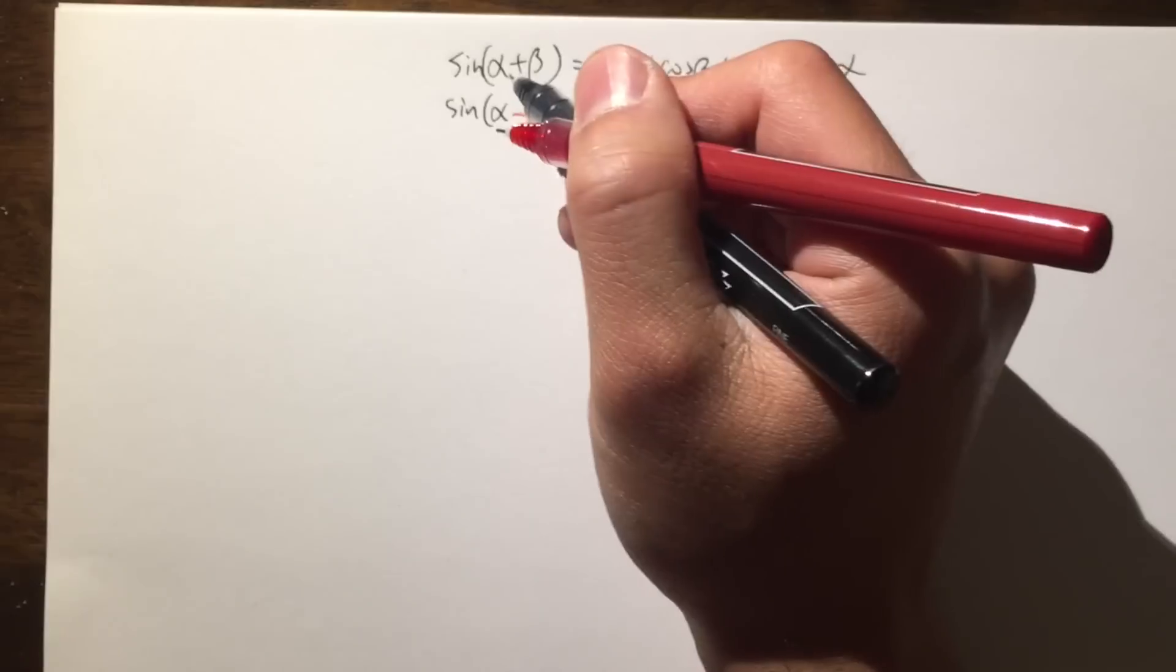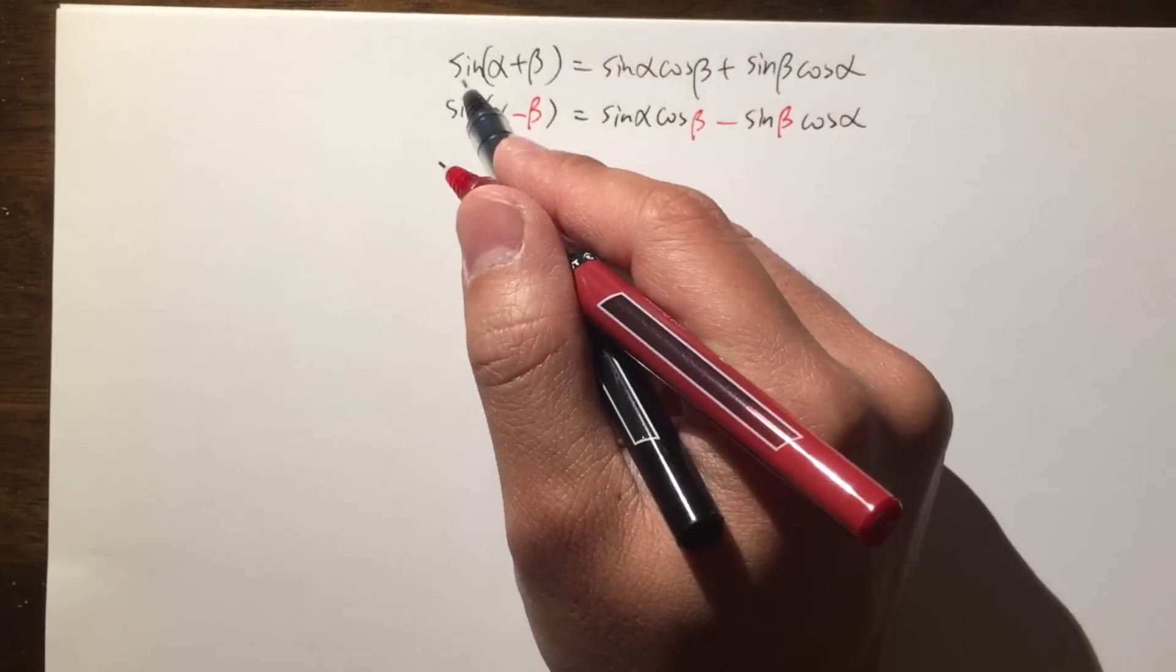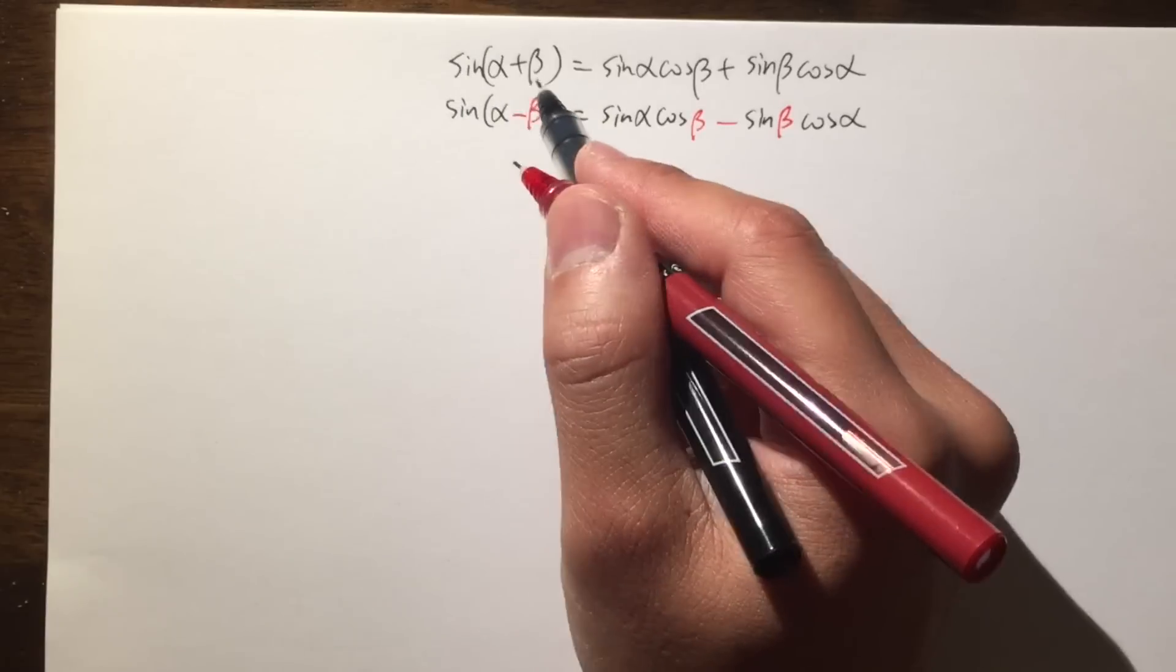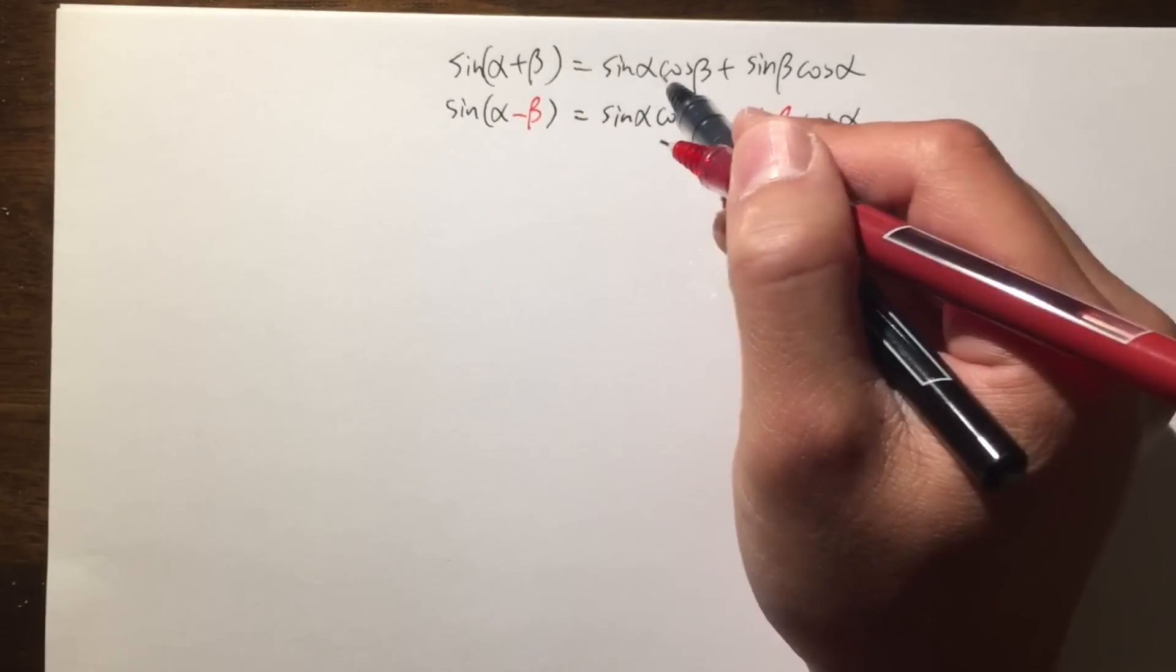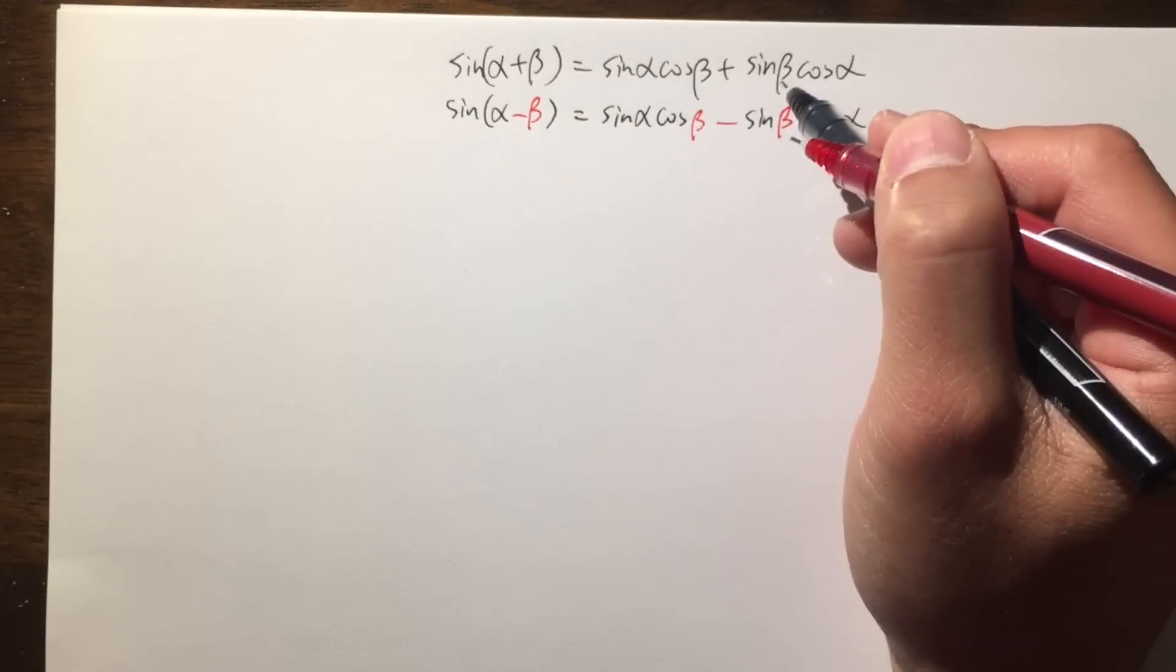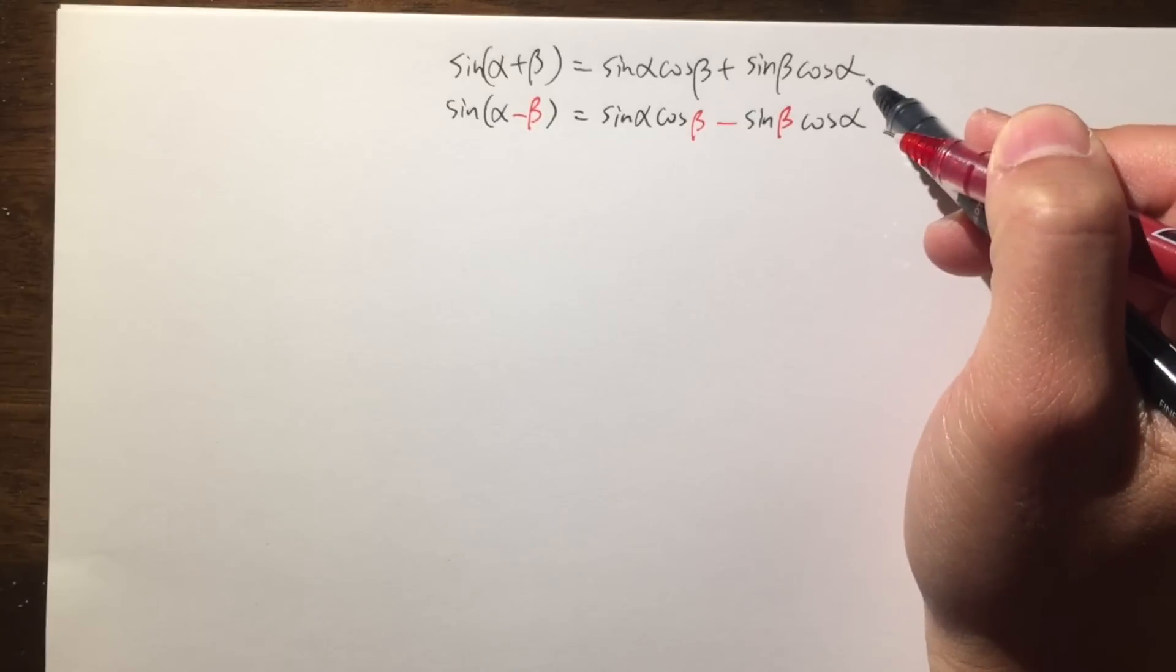And first of all, we'll be looking at the angle sum formula for sine, which says sine of alpha plus beta is equal to sine alpha times cosine beta plus sine beta times cosine alpha.